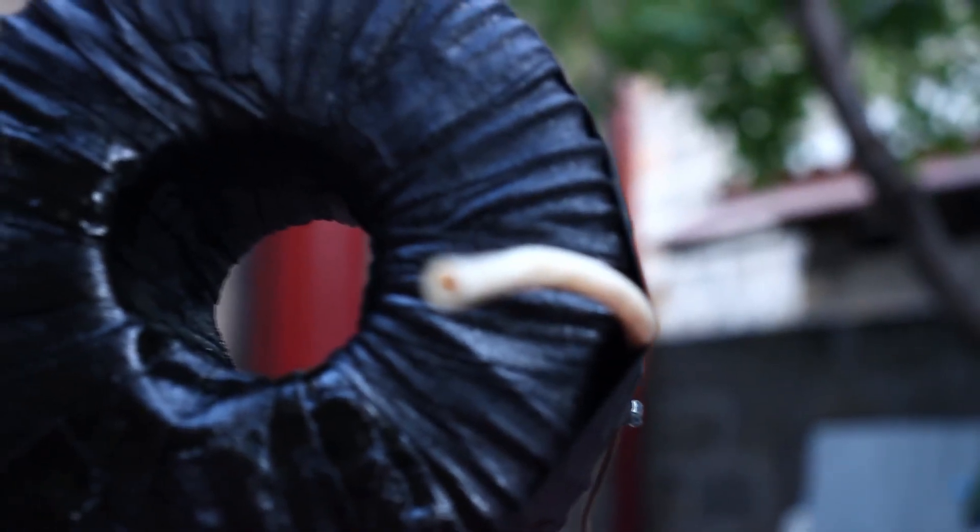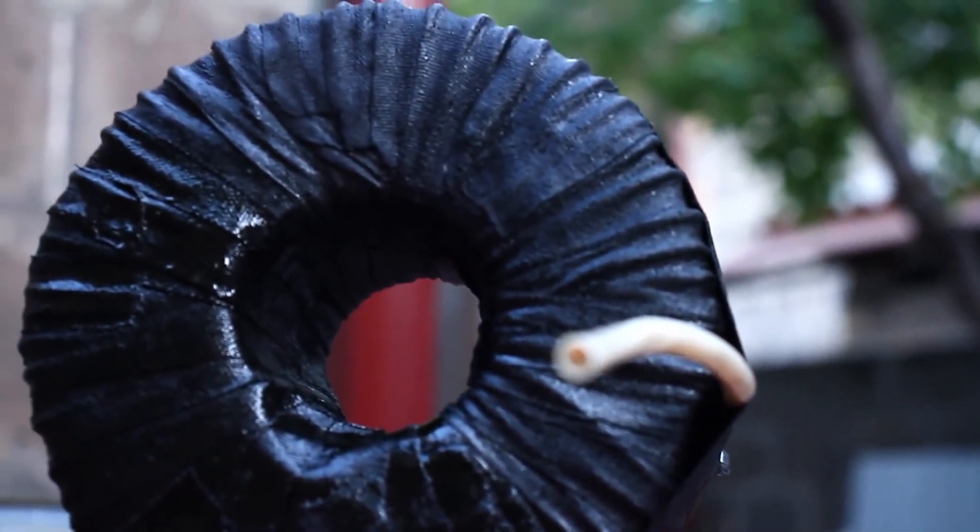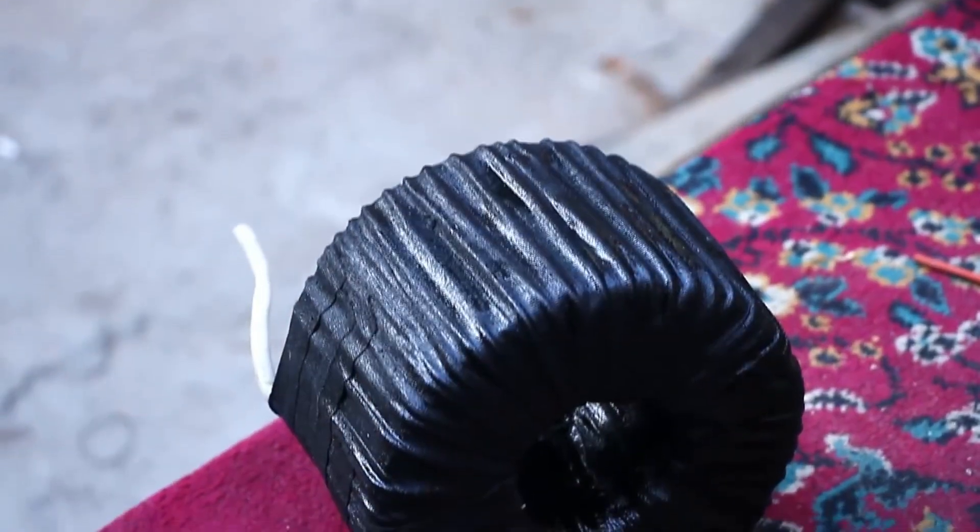I used cloth tape for insulation, and I soaked the tape in varnish. Yes, such insulation worsens the cooling conditions, but the primary winding here has a margin. Also, there will likely be a fan blowing on the transformer.